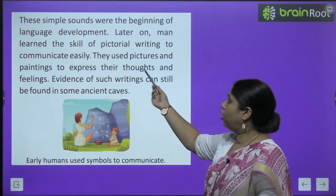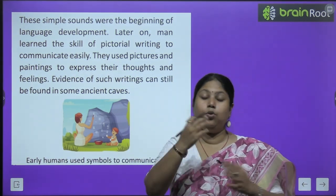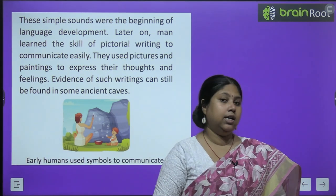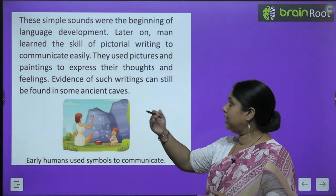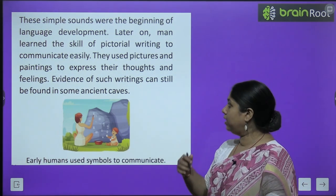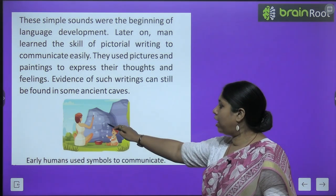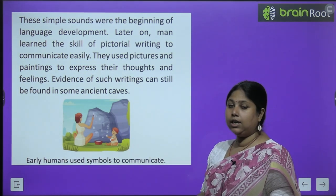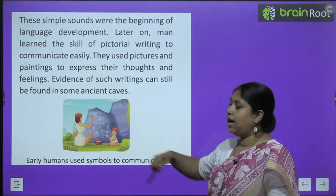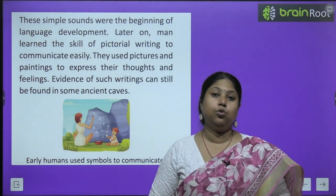Later on, man learned the skill of pictorial writing. People made pictures to communicate — through pictures or images — for others to understand their thoughts. Here we have paintings, small pictures, paintings — slowly and gradually which is a writing method. First, people communicated with such pictures. They drew different kinds of pictures. There are many caves where we can see this kind of drawings or pictures.